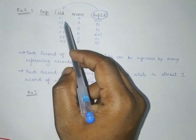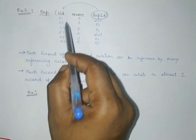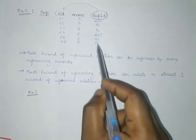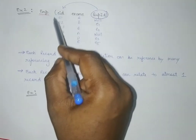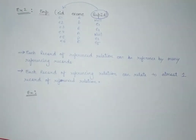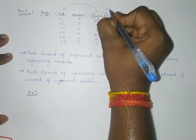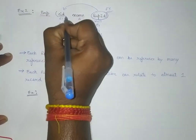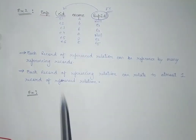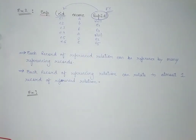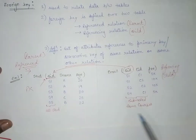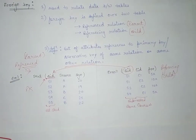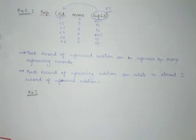Here you can see that supervisor ID is referencing the same relation. The values of supervisor ID cannot go beyond the IDs listed under employee ID, which means supervisor ID is a foreign key referencing the primary key of the same relation. This is how it works for the same relation, and similarly for two different relations.